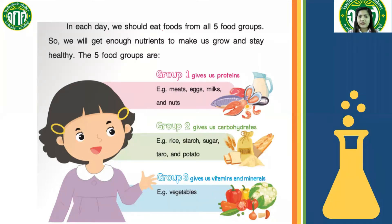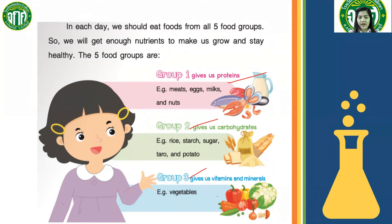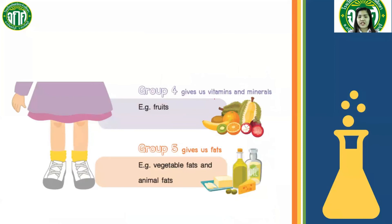Each day, we should eat foods from all five food groups to get enough nutrients to make us grow and stay healthy. Group one: proteins — meat, eggs, milk, and nuts. Group two: carbohydrates — rice, starch, sugar, taro, and potato. Group three: vegetables, which give us vitamins and minerals. Group four: fruits, which also give us vitamins and minerals. Group five: fats — vegetable fats and animal fats.